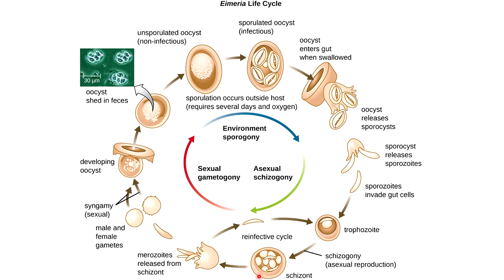When they're inside the schizont, they're referred to as merozoites. These merozoites are then released from the schizont, and eventually the merozoites form male or female gametes or sexual organs.